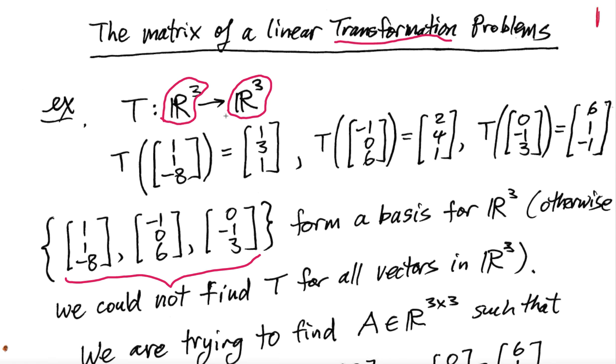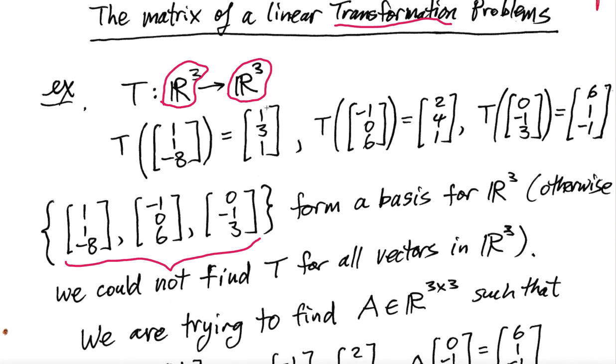T is mapping R³ into R³. So R³ here is the domain, and R³ here is what we would call the co-domain. What that means is you're mapping into R³, not necessarily onto it. But we'll talk more about onto maps and stuff later on in a future video. The bits of information that you are given is that T of (1, 1, -8) is (1, 3, 1). T of (-1, 0, 6) is (2, 4, 1). And T of (0, -1, 3) is (6, 1, -1).